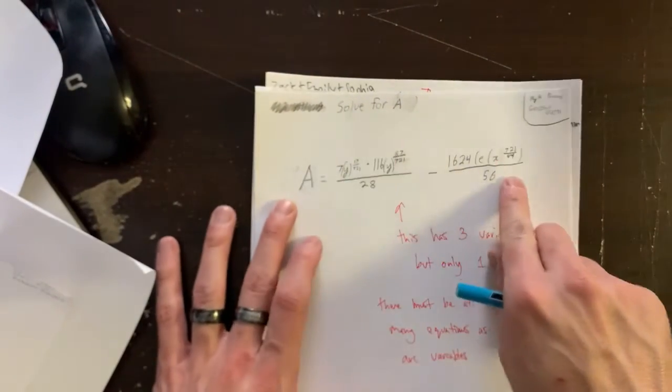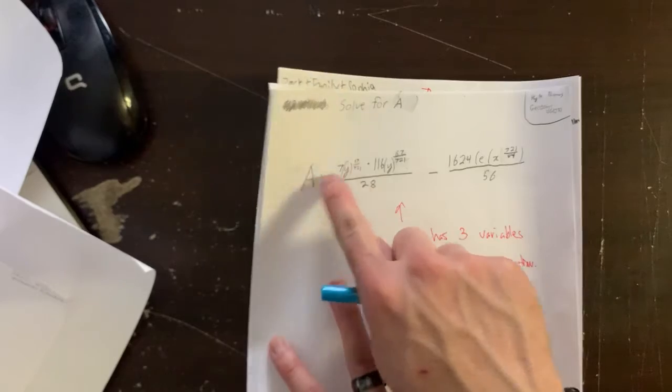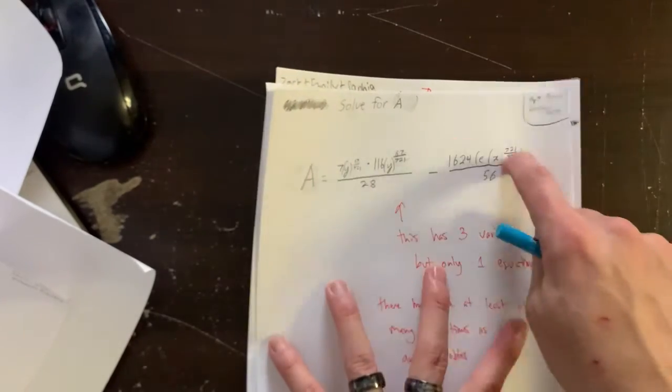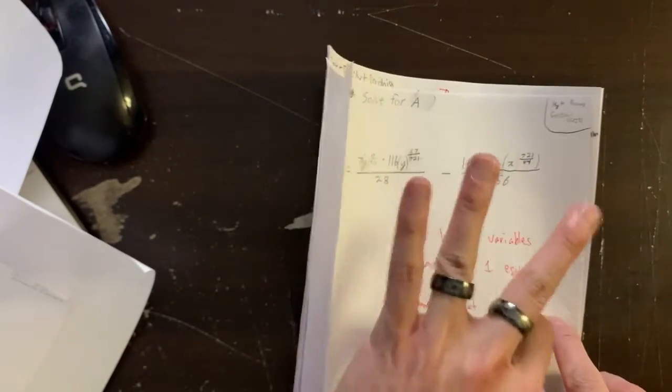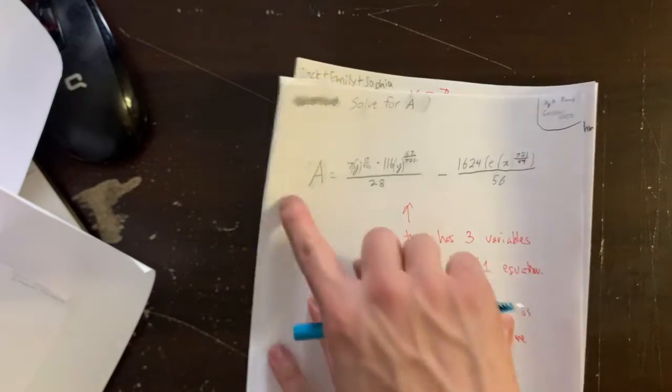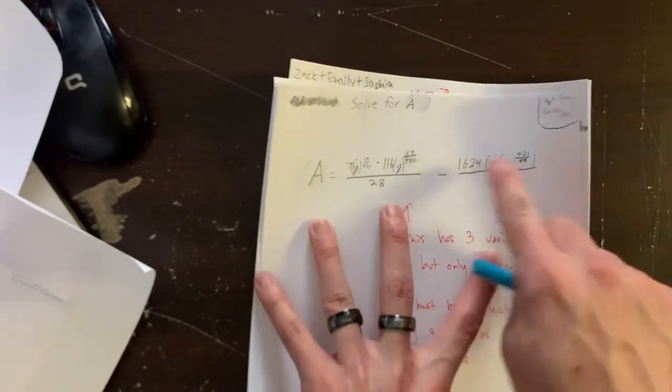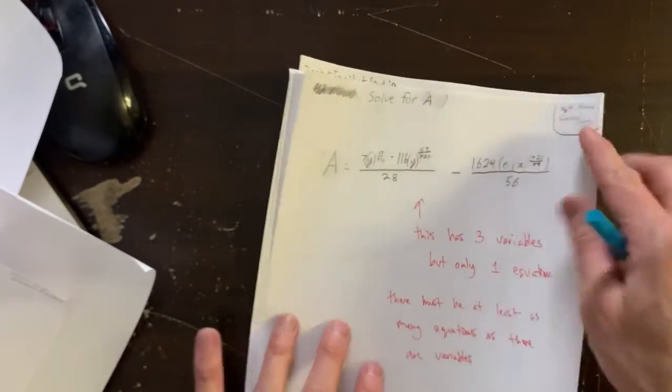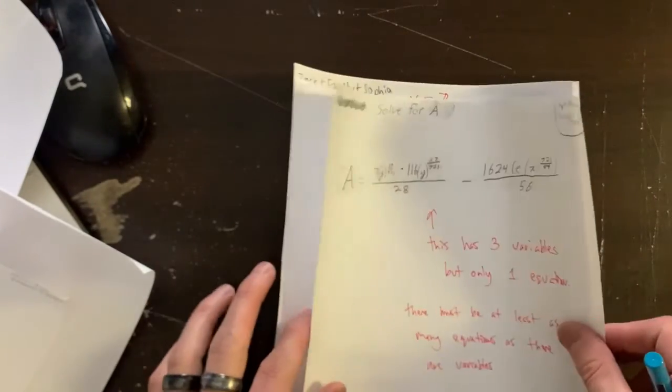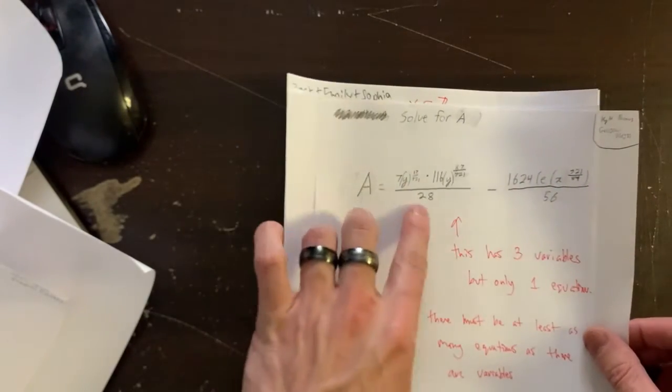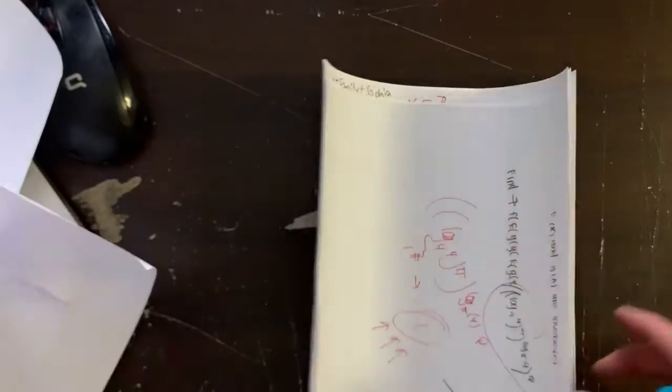Let's see here. Solve for a. But the thing here is that there's a, y, and x. If there are three variables, there have to be at least three equations. So if I have one equation with three variables, I cannot really solve for any of them. So in a sense, my hands are tied up, right? I need more equations to accompany this one equation there.